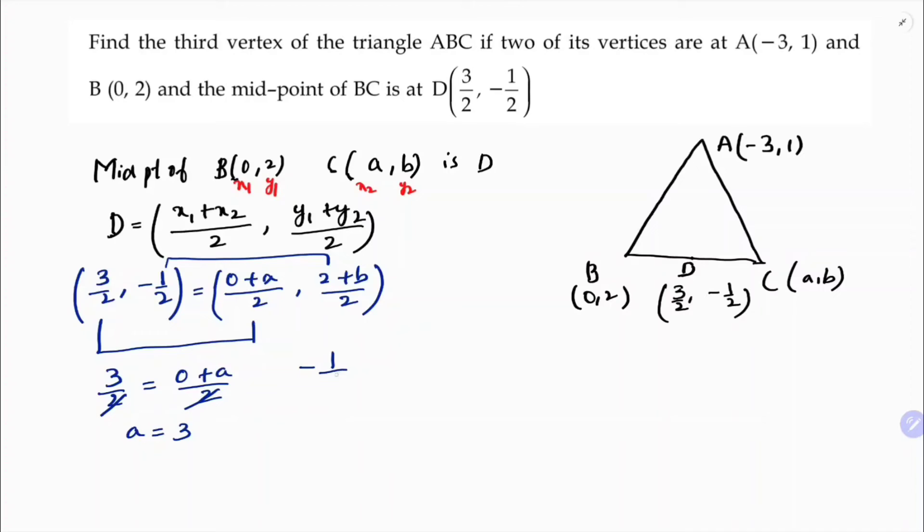In the same way for y-coordinates: -1/2 = (2 + b)/2. The 2s cancel, so 2 + b = -1. Therefore b = -1 - 2, so the value of b is -3.